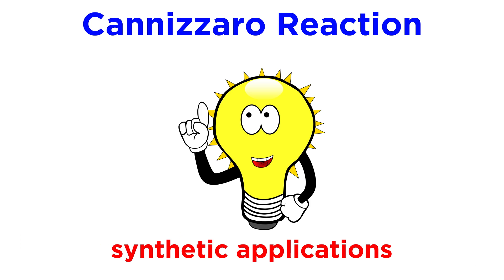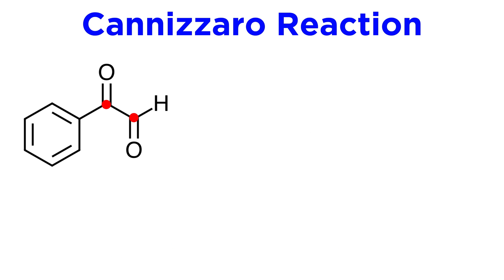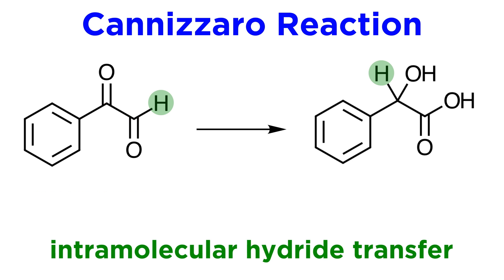Apart from these situations involving unwanted side products, there are actually quite a few clever synthetic applications of this chemistry. Consider the following substrate: if a molecule contains two carbonyl groups and yet is not enolizable, one might wonder if it is possible to induce an intramolecular hydride transfer. Remember that the key step in the mechanism involves hydride transfer from one aldehyde to another, and there is no reason why this could not occur with adjacent carbonyls on the same molecule, which in this case would yield mandelic acid.